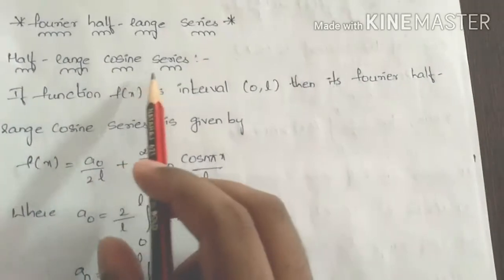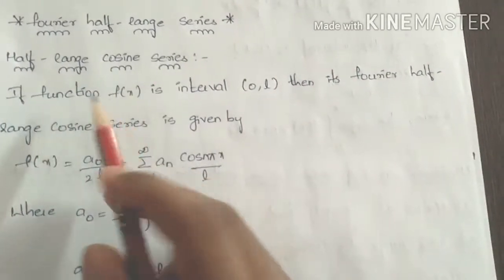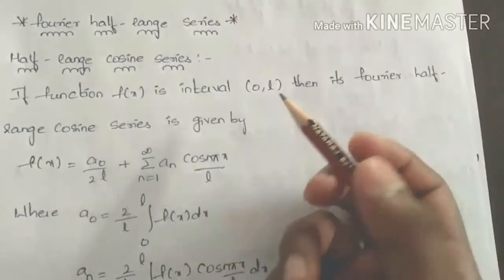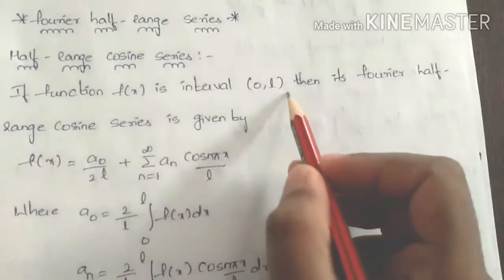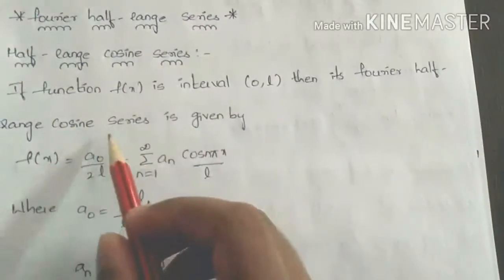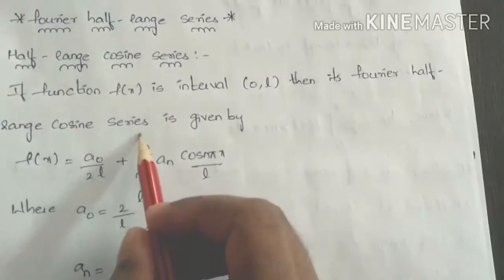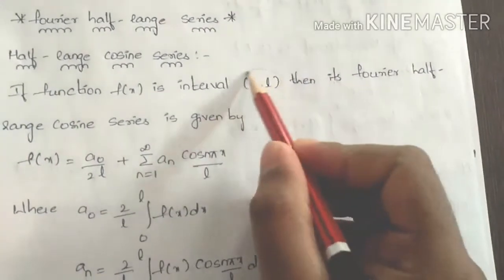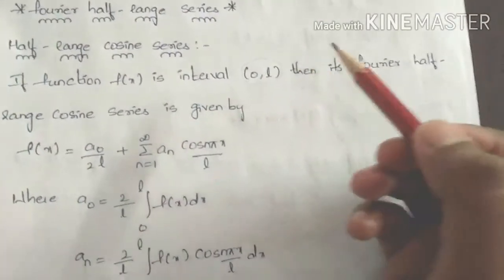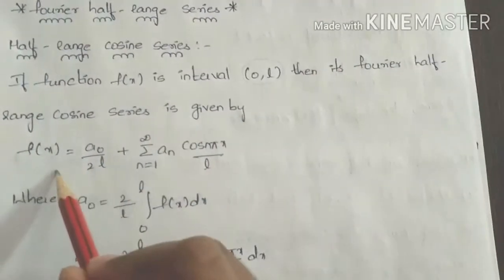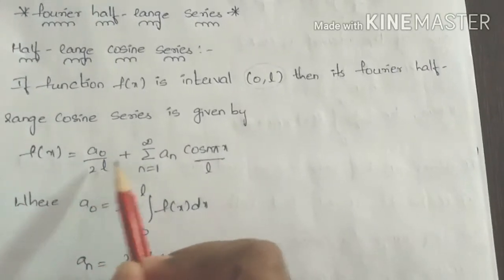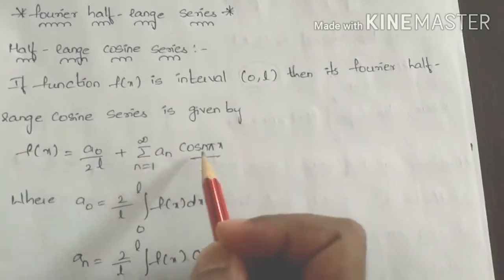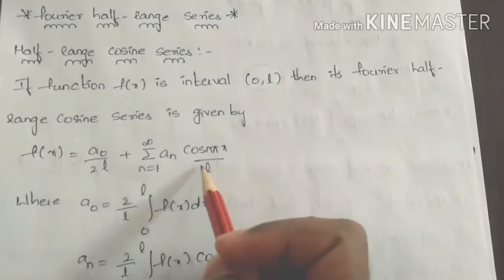First, half range cosine series. If function f of x is in the interval 0 to l, then the Fourier half range cosine series is given as: f of x is equal to a0 by 2 plus summation n equals to 1 to infinity, an cos(n pi x by l).